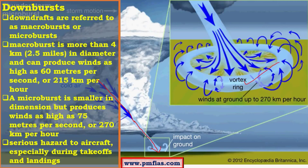This vortex ring has wind speeds at very high velocities. There are two kinds of downbursts: macro and microbursts. In microbursts, the vertical section is about 4 km in diameter and the winds might be about 215 km per hour. In microbursts the winds are much more violent but the thickness is comparatively low. Both phenomena are due to intense downdrafts along a narrow channel of air.